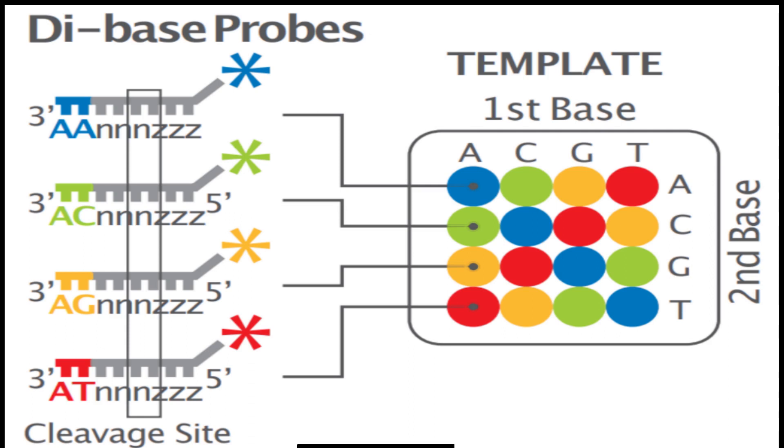They use a two-base encoding system that assigns each unique pair of bases on the three-prime end of the probe one of four possible colors. For example, AA might be assigned to blue and AC to green.